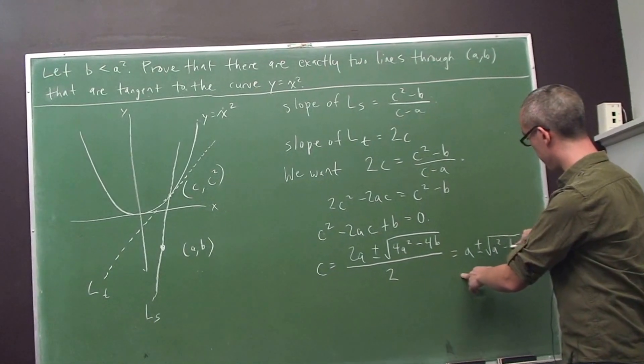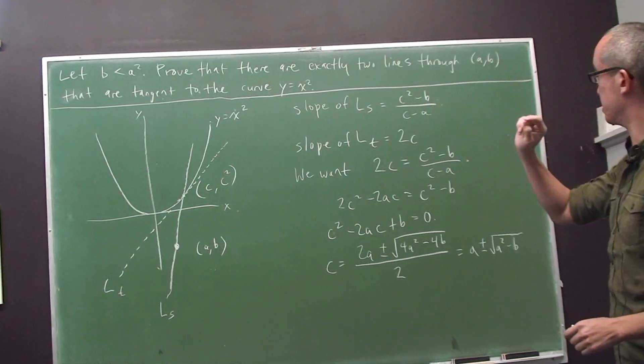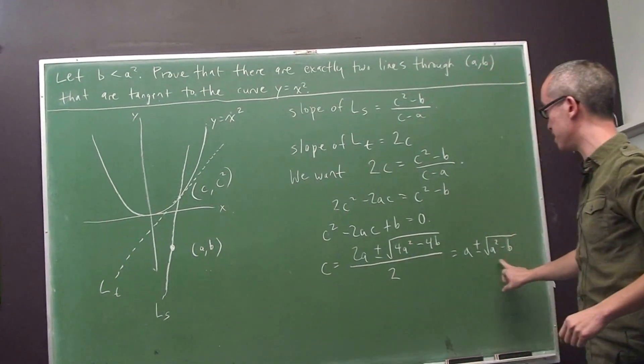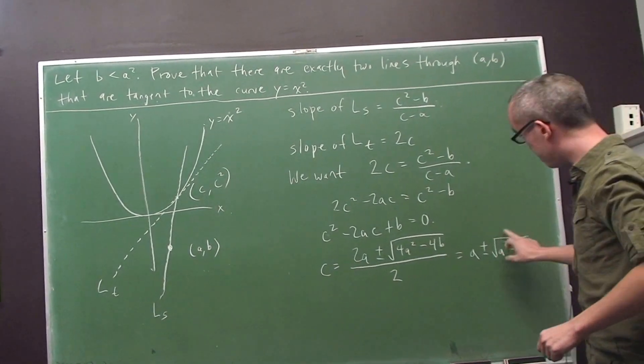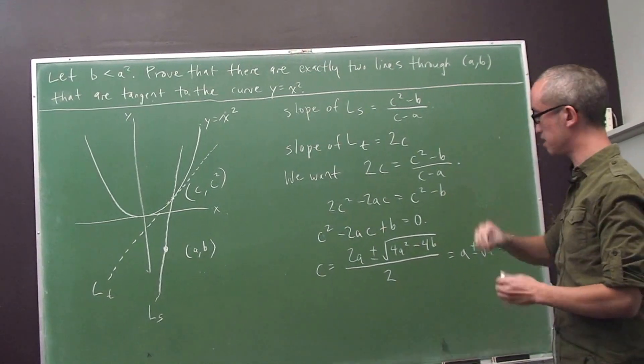Now here's where the condition becomes important, because we're told, remember, that b is less than a². We're told that the point is below the parabola. So since b is less than a², the thing underneath the square root sign is positive, and that means that we have, in fact, two distinct solutions.